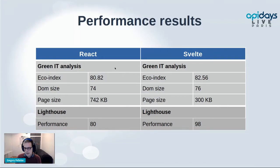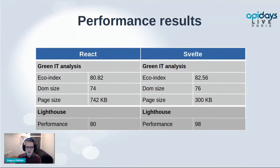The eco-index is not very different — this is mainly due to the formula used to calculate the index, which focuses on DOM size, which is quite similar for both versions. That's normal since the framework used does not change the HTML complexity of the document. Svelte mainly optimizes JavaScript file size and makes browser rendering more efficient, which is why the performance score is better with Svelte. On this example, we can see that changing technology won't make a big difference on ecological impact — there's no magic tool that will turn your application into an eco-friendly one.